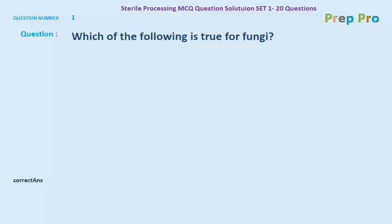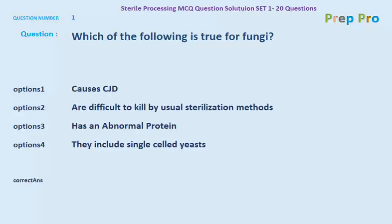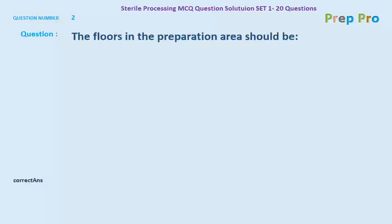Welcome to Prep Pro Israel Processing MCQ question solution, set one of 20 questions. Question number one: which of the following is true for fungi? Option one: causes CJD. Option two: are difficult to kill by usual sterilization methods. Option three: has an abnormal protein. Option four: they include single-celled yeasts. The correct answer is option four — they include single-celled yeasts.